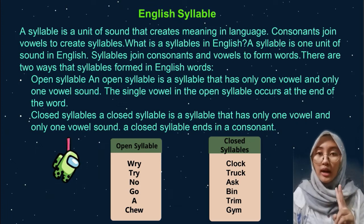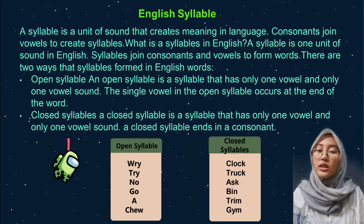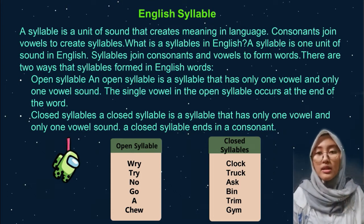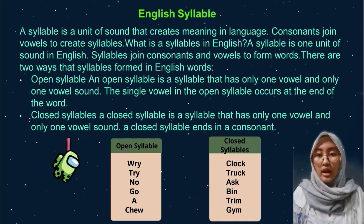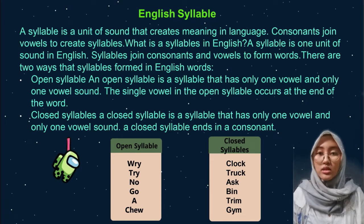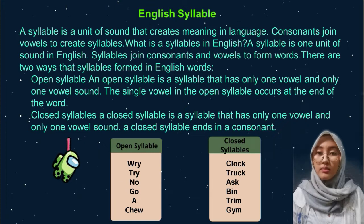The second is closed syllables. A closed syllable has only one vowel and one vowel sound, and it ends in a consonant. For example: club, trap, ass, beat, trim, gym.